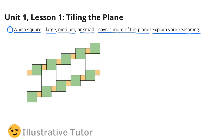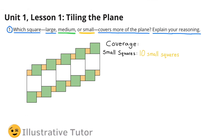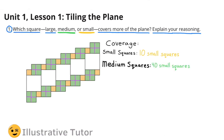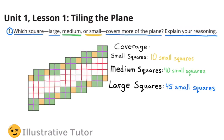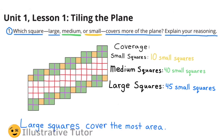Number 1. Which square — large, medium, or small — covers more of the plane? Explain your reasoning. For the small squares, they cover 10 small squares. The medium squares cover a total of 40 small squares. And the large squares cover a total of 45 small squares. The large squares cover the most area.